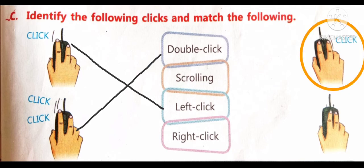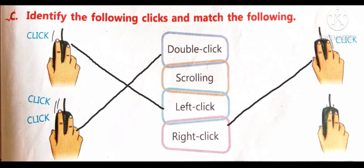Now, the third one. It shows the right click. So, match it with the option right click. And the last one is scrolling. So, match with scrolling.